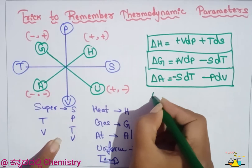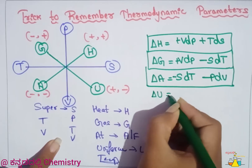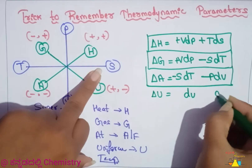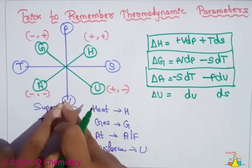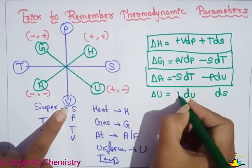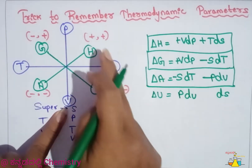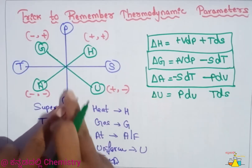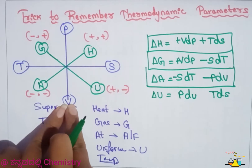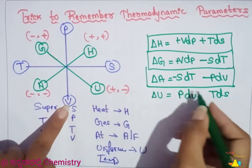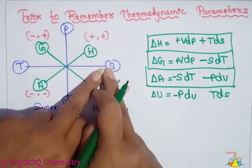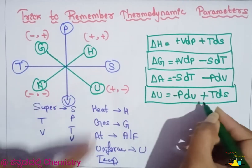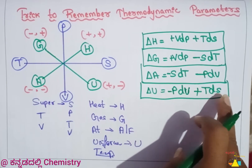Next, change in internal energy: delta U equals TdS minus PdV. V is opposite P, so that means P. S is opposite T, so that means T. V is negative, so minus PdV; S is positive, so plus TdS. Therefore delta U equals minus PdV plus T·dS.